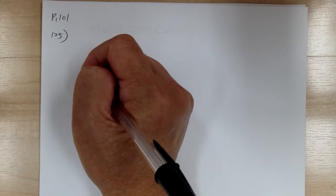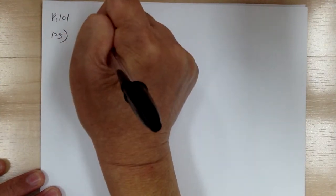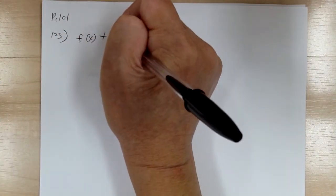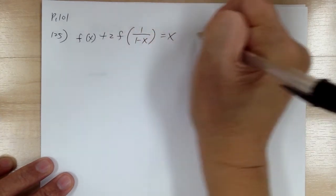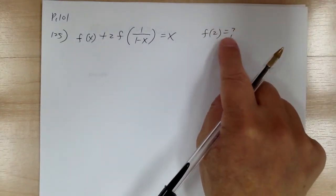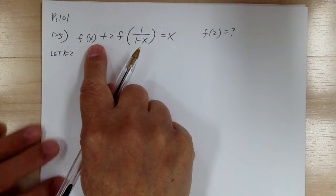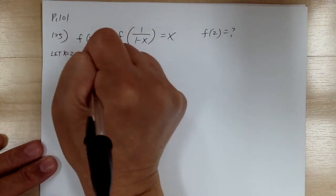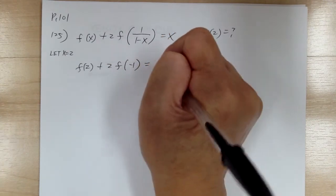Let's go to the next one. It says: given a function f of x satisfying f of x plus 2 f of (1 over 1 minus x) equals x, find f of 2. Since we're looking for f of 2, we let x equal to 2. This gives f of 2 plus 2 times f of negative 1 equal to 2.